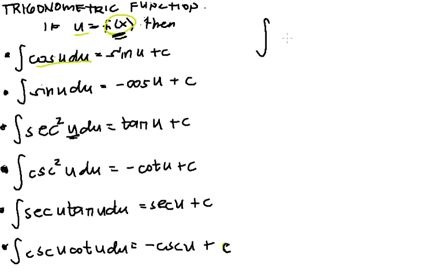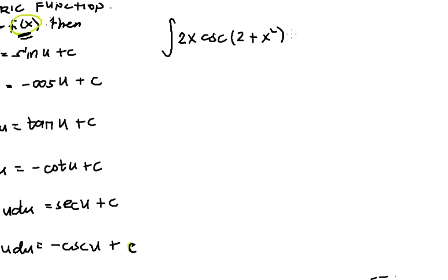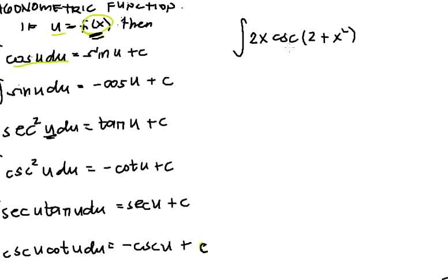Say we have 2x cosecant(2 + x²) cotangent(2 + x²) dx.